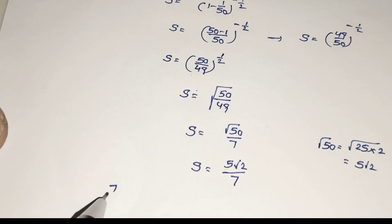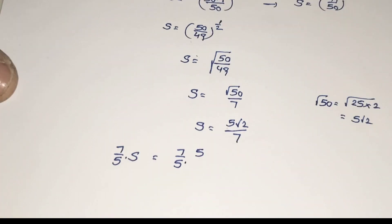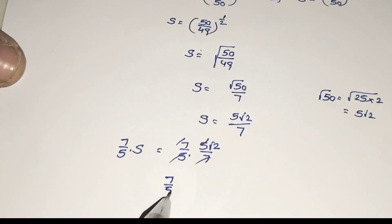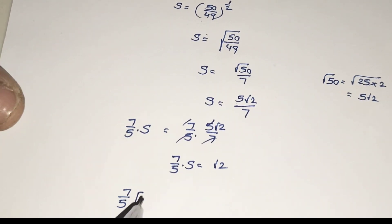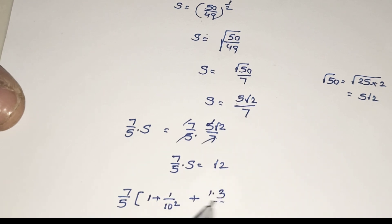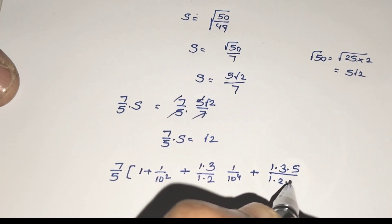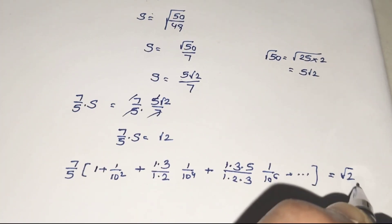But the given question is (7/5) × s. So (7/5) × s = (7/5) × (5√2 / 7) = √2. Therefore (7/5) × (1 + (1/10²) + (1×3)/(1×2)×(1/10)⁴ + (1×3×5)/(1×2×3)×(1/10)⁶ + ...) = √2. That's the answer.